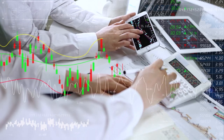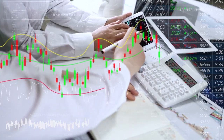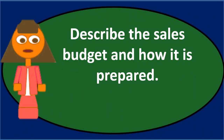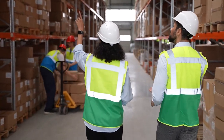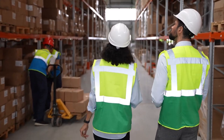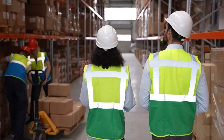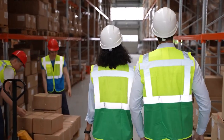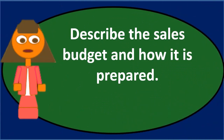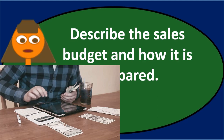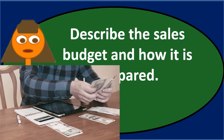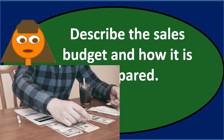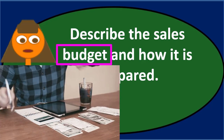When we consider a master budget, we are typically considering a manufacturing company, as that's the most complex case. There's got to be an order in which the budgeting process must happen. The end result will typically be the budgeted financial statements — the budgeted balance sheet and budgeted income statement. The starting point will typically be the sales budget.